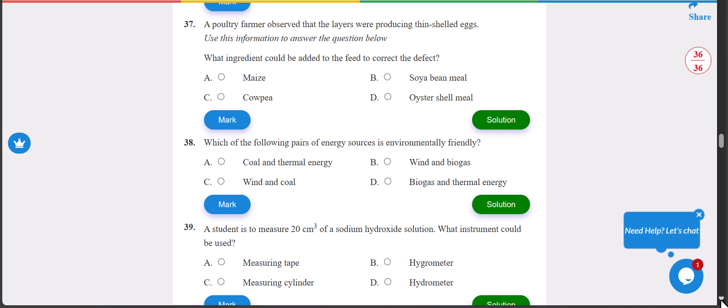Number 37: a poultry farmer observed that the layers were producing thin-shelled eggs. What ingredient could be added to the feed to correct the defect? The answer is D, oyster shell. When it is added it will stop that problem.